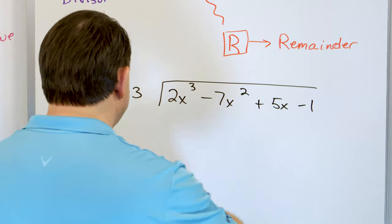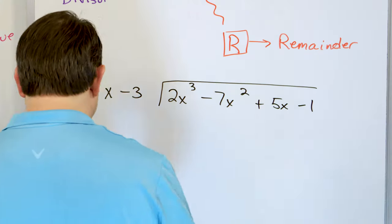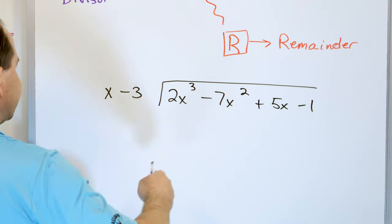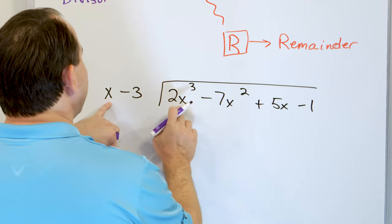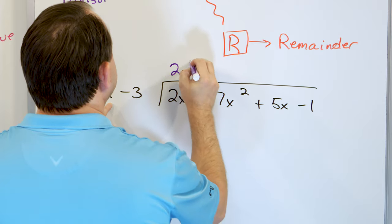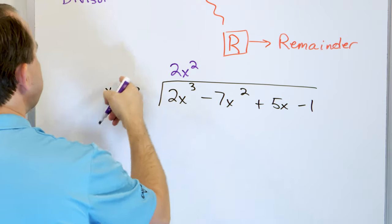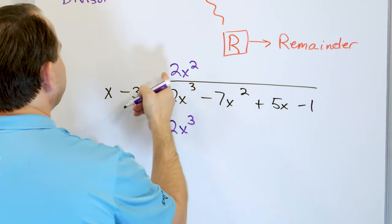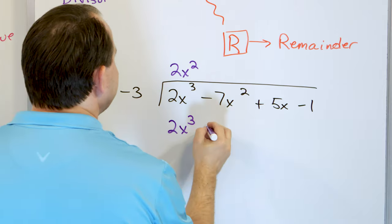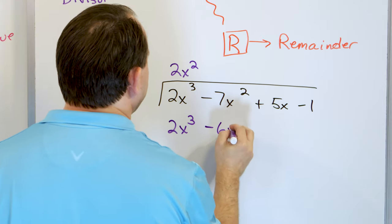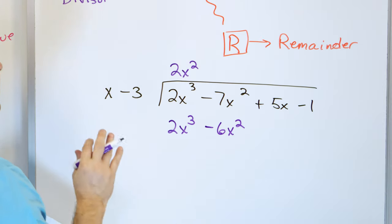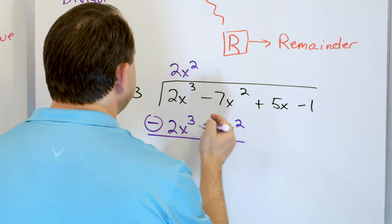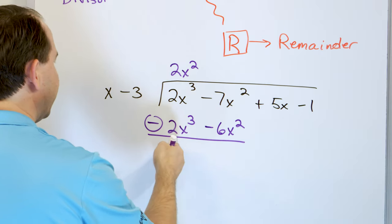x times what gives me 2x cubed? It's got to be 2x squared. Multiply down to get 2x cubed, and multiply to get negative 6x squared. We're going a little fast because we've done division many times before. We subtract both of these — we get zero here.